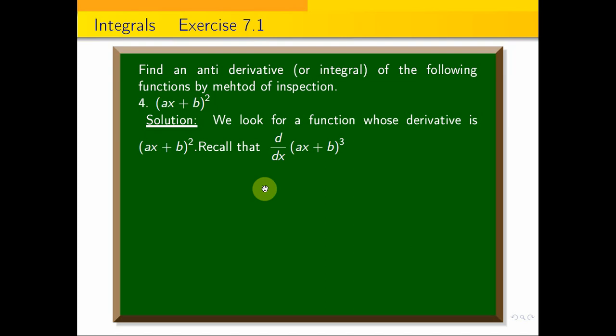So, we know that d/dx of (ax + b)³. Differentiate this, we will get 3(ax + b)² · a.